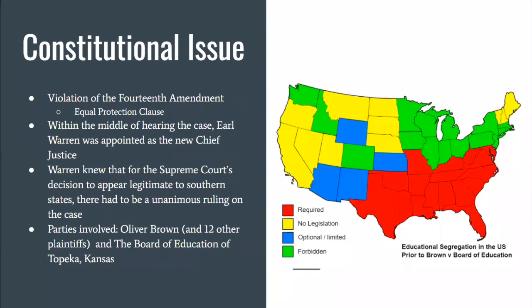The constitutional issue being discussed was the violation of the 14th Amendment. The 14th Amendment has an equal protection clause stating that every person shall be protected equally under the law. In the case of Linda Brown, they argued that people were not being equally protected. Within the hearing, Justice Earl Warren was appointed as the new Chief Justice after Chief Justice Vinson passed away.